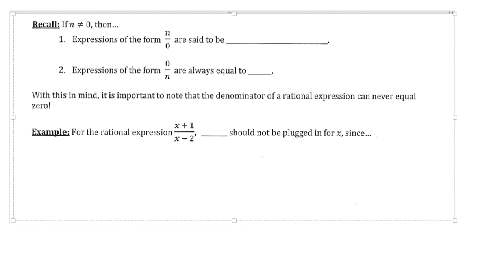So here we go, a couple of recall statements here. If the value of n does not equal zero itself, then we have the following two items to discuss. The first being expressions of the form n over zero are said to be, and that would be undefined.